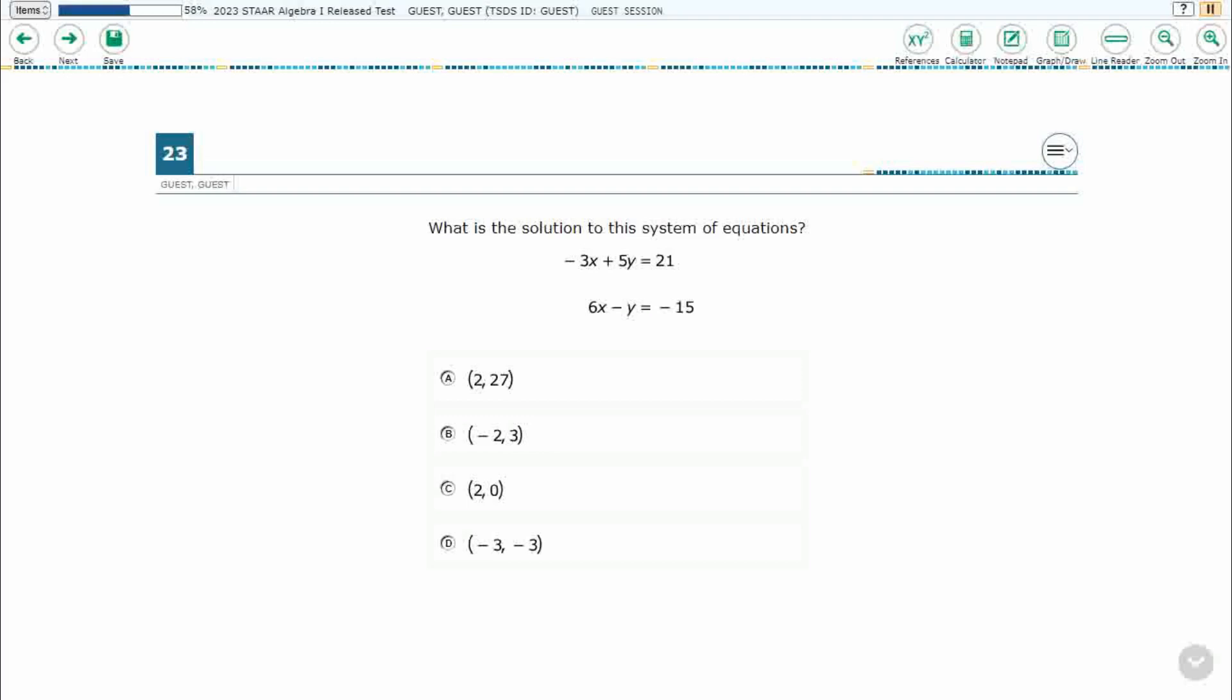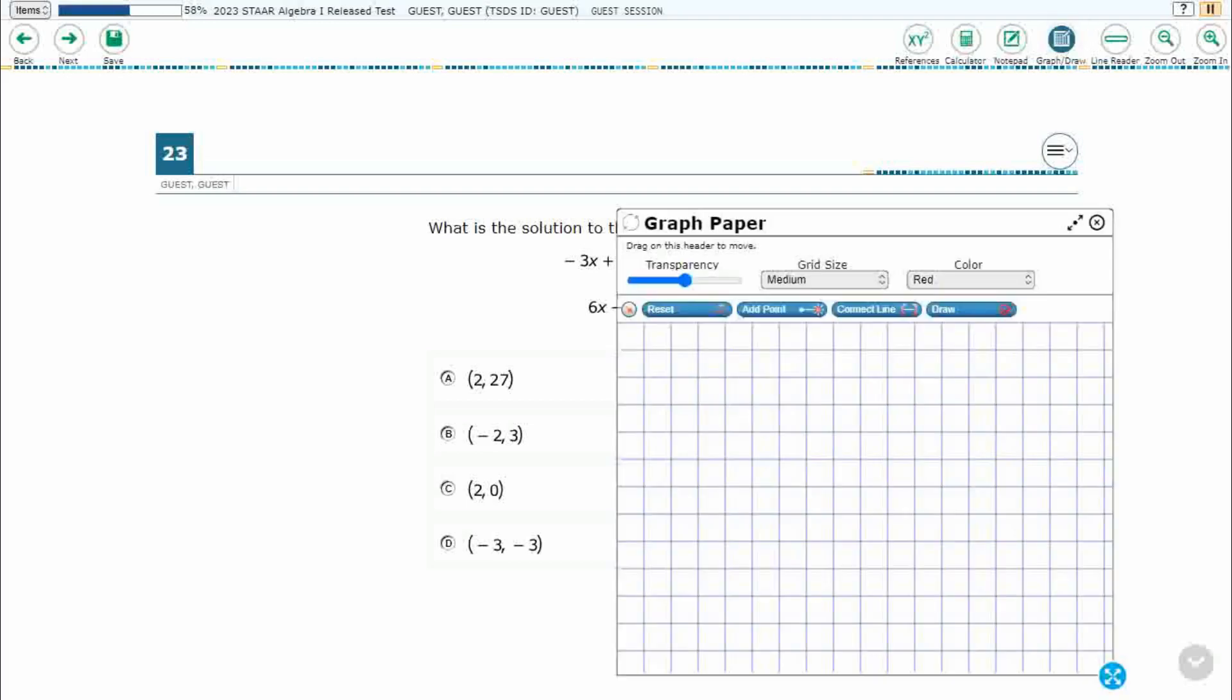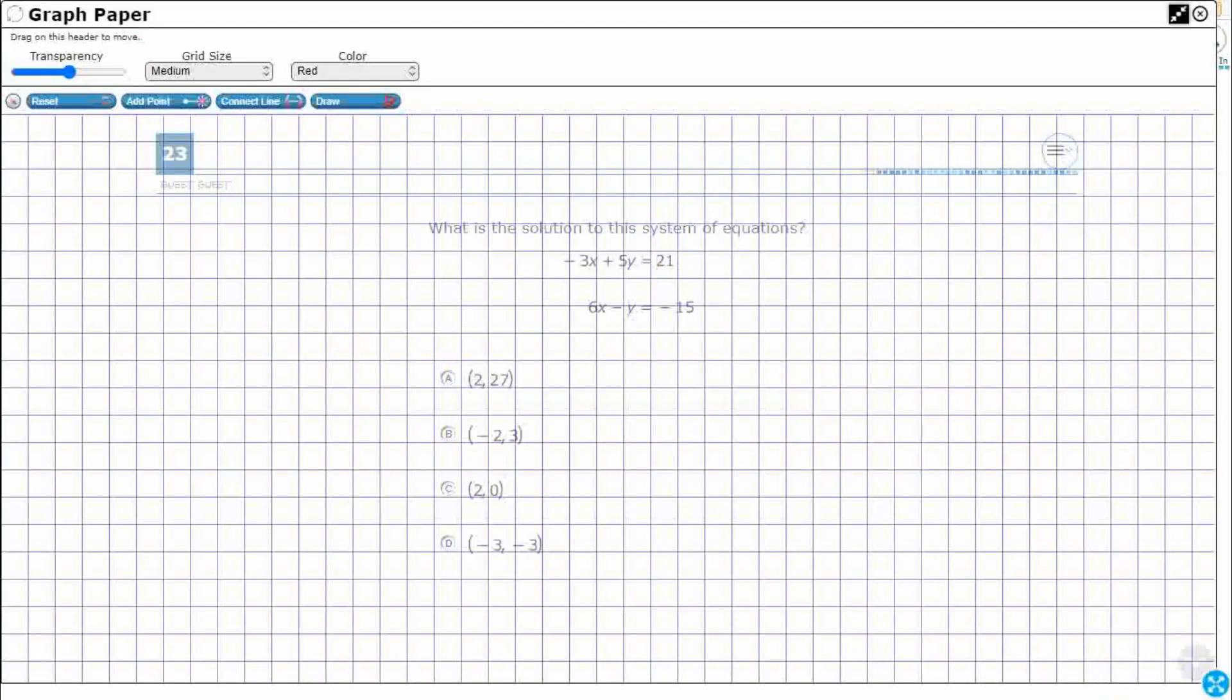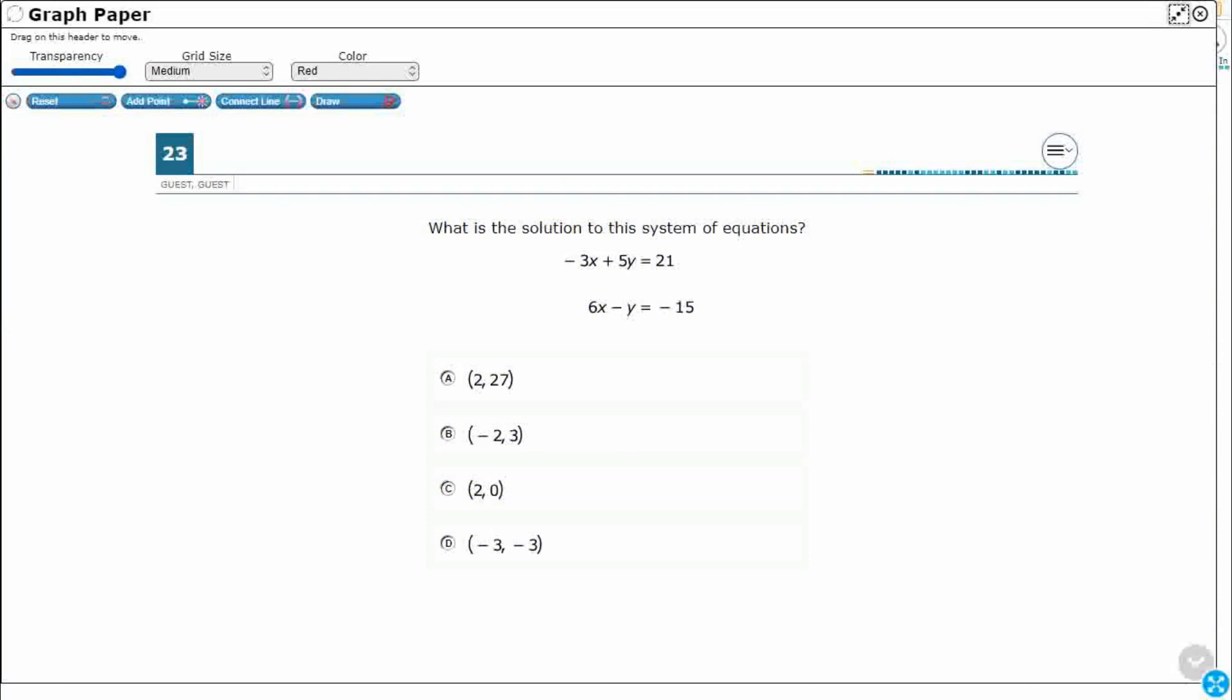All right, so we need to find the solution to this system of equations. Now, what does that mean? Well, there's many different ways you can do this. If you were to graph both of these, one of these might look like this. Another one might graph like this. Really, a solution is going to be right there.